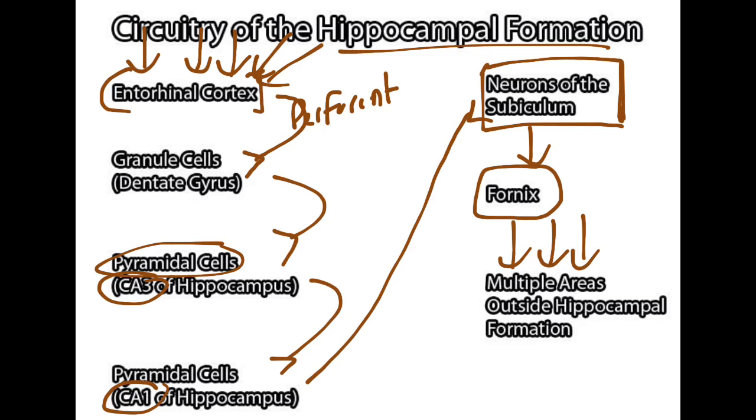Ultimately, this is a very basic overview of the circuitry of the hippocampus and a much larger limbic system that is extremely complex. But I hope that this gives you an idea of how information passes from structure to structure.